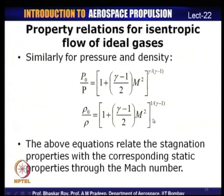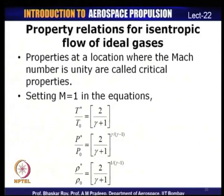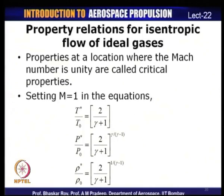These are property relations relating stagnation parameters to static parameters through Mach number. If Mach number equals 1 — at the end of a nozzle — and we substitute M = 1 into those equations, the properties obtained are known as critical properties, denoted with a superscript star (*).